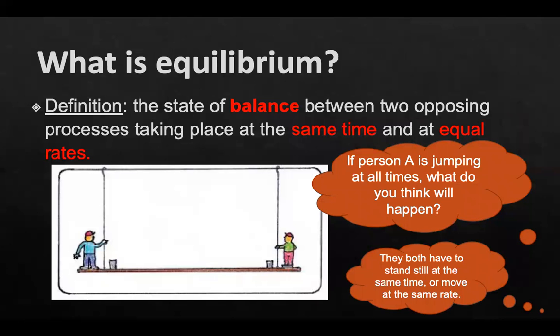So what exactly is equilibrium? Equilibrium is defined as the state of balance between two opposing processes taking place at the same time and at equal rates.